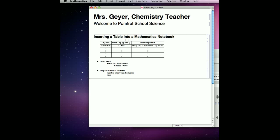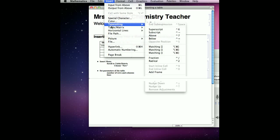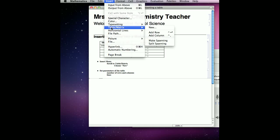Go to the Insert menu. Scroll down to Table Matrix. A new list will appear. Choose New.